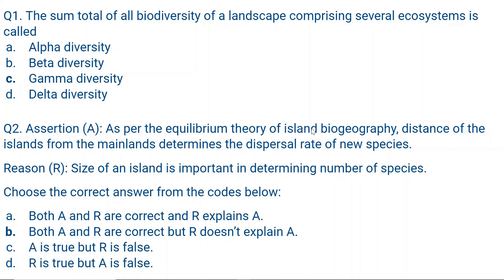The island's distance from the mainland — like Lakshadweep's island being far from the land — affects the dispersal rate of new species. How far the island is determines how many new species can disperse to it. So both size and distance are relevant, but they don't explain each other. The correct answer is B.